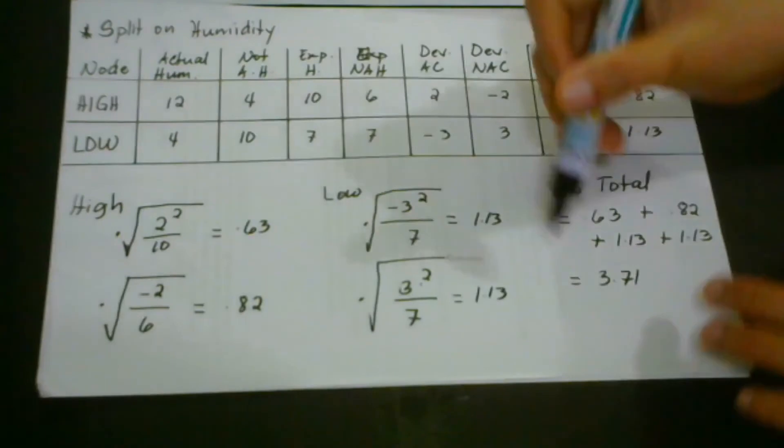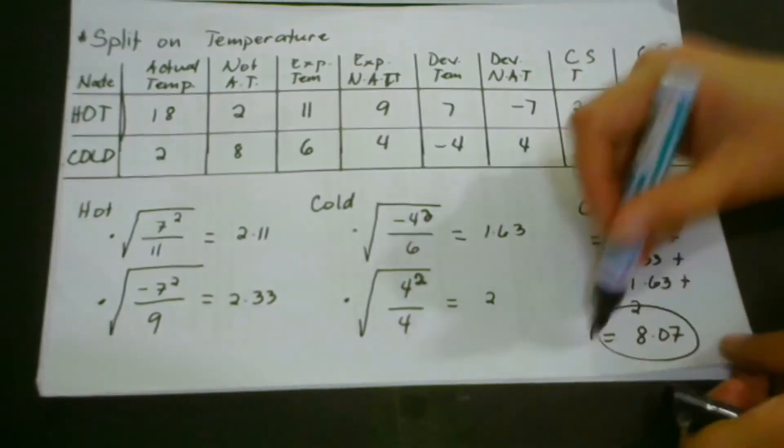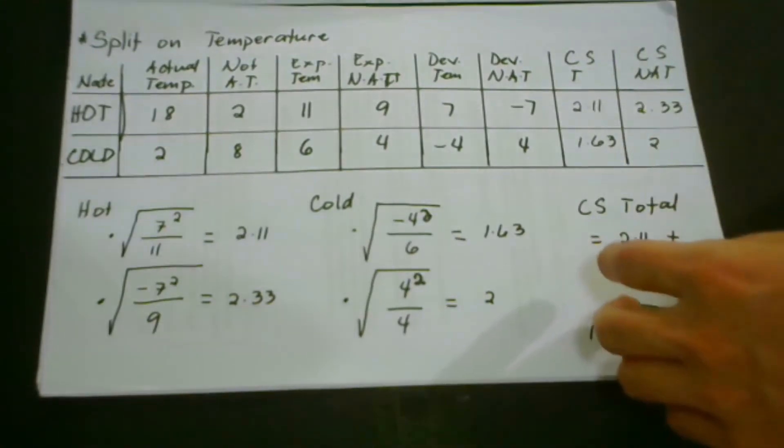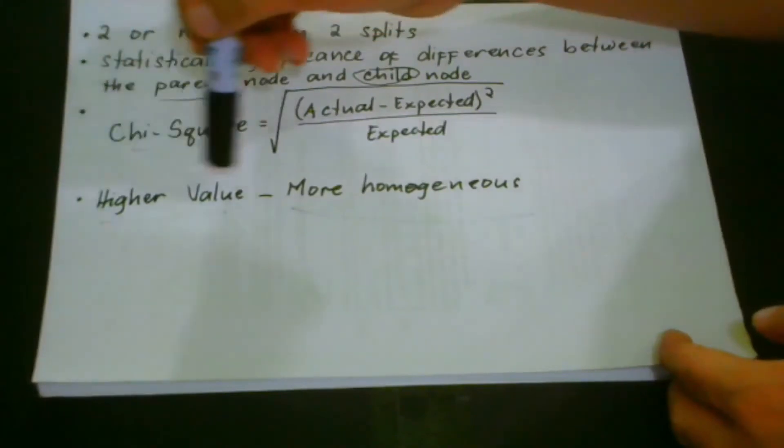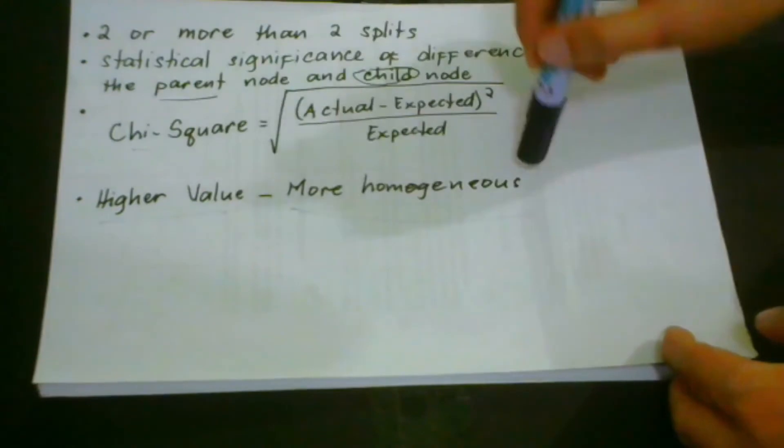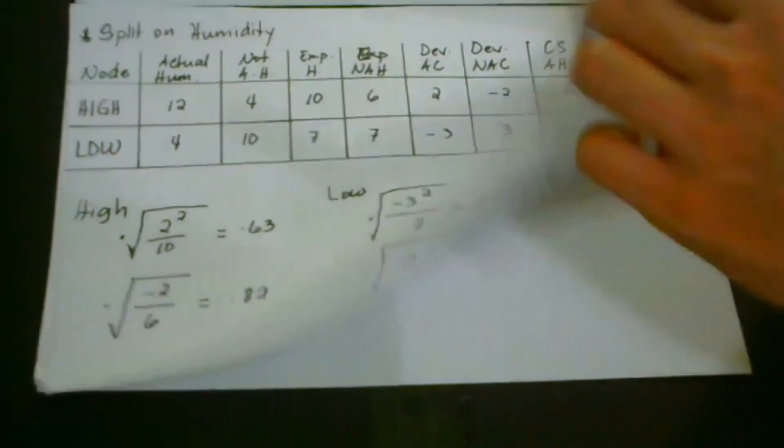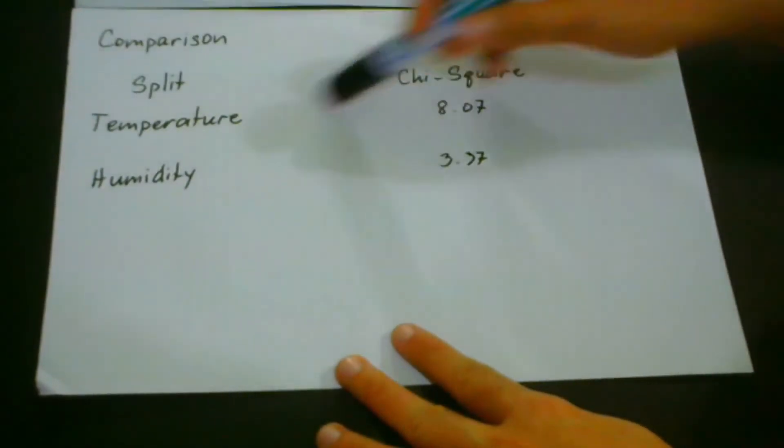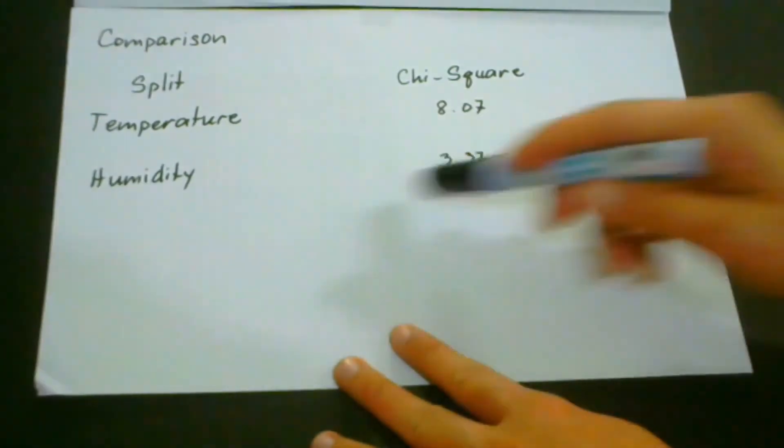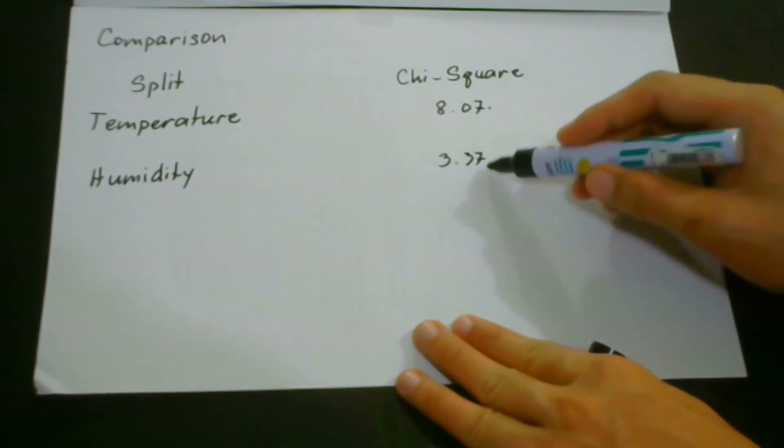So after finding 3.71 and 8.07, what we do here now is that we're going to make comparison. As what we have discussed, the higher the value of the chi-square means the more homogeneous the split is. So let's find here the comparison. So the temperature has a value of 8.07 and the humidity is 3.71. So 8.07 is higher than 3.71.